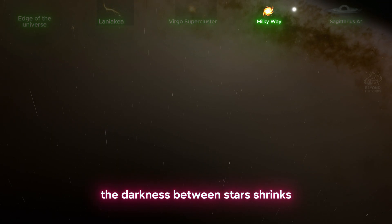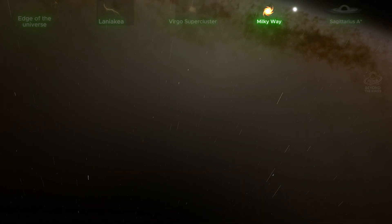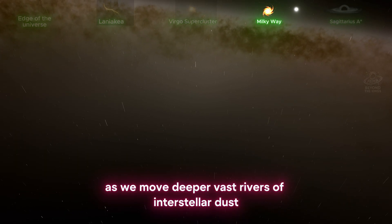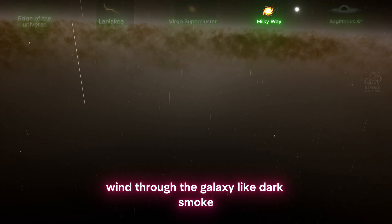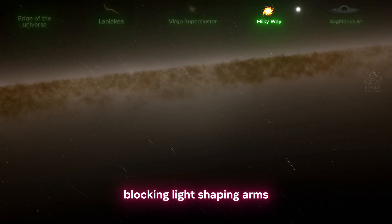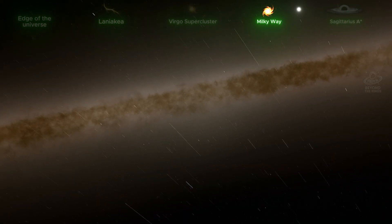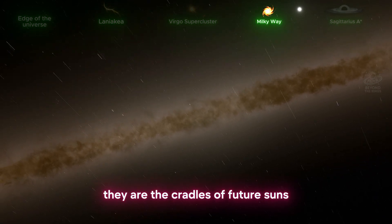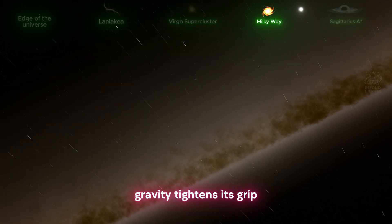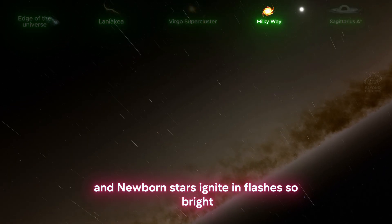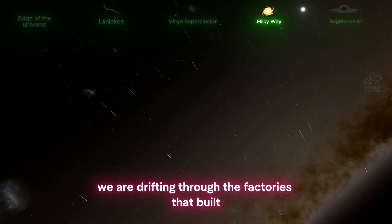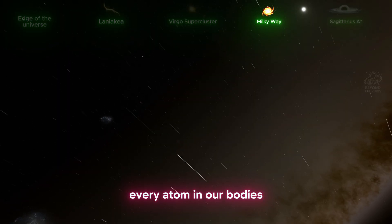The darkness between stars shrinks. Light becomes overwhelming. Space begins to feel alive. As we move deeper, vast rivers of interstellar dust wind through the galaxy like dark smoke, blocking light, shaping arms, carving pathways through the starlight. These shadows are not empty, they are the cradles of future suns. Inside them, atoms collide, gravity tightens its grip, and newborn stars ignite in flashes so bright they can outshine entire star clusters. We are drifting through the factories that built every atom in our bodies.